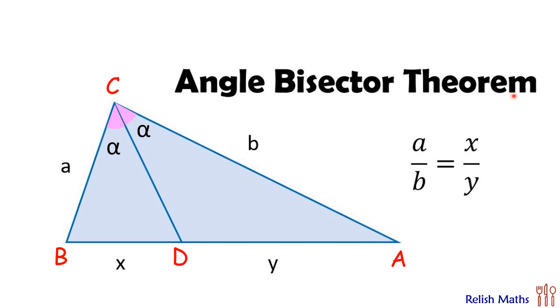So angle bisector theorem states that if CD is the angular bisector, then it divides the opposite side in the same ratio as the ratio of sides which are making this angle.